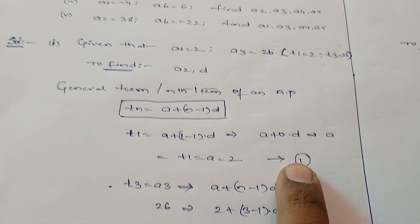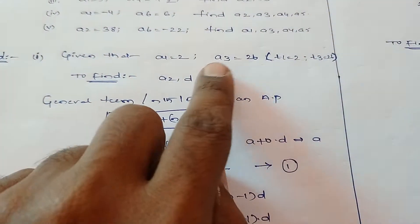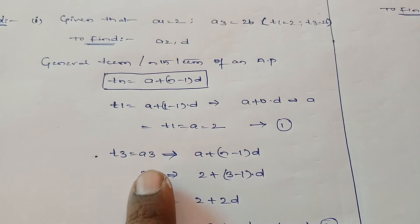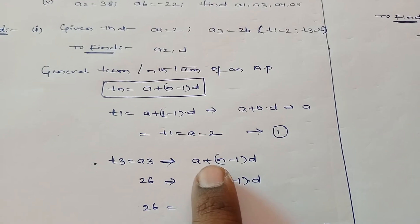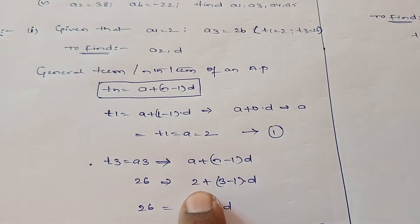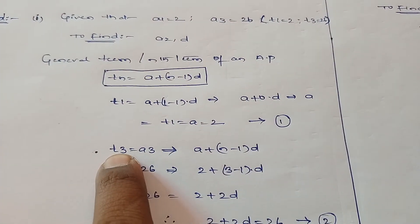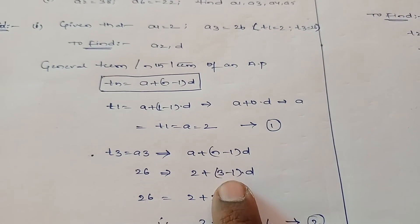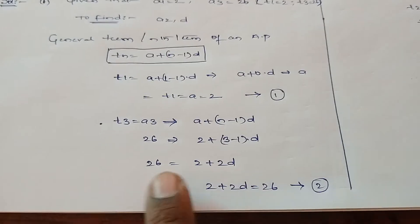Coming to third term, t3 is given as 26. In place of t3, mention 26 and substitute the values in the formula: a plus n minus 1 into d. The a value we know as 2, and n value is 3 because tn here n value is given as 3. So n minus 1, nothing but 3 minus 1, and d value we don't know, we need to find.